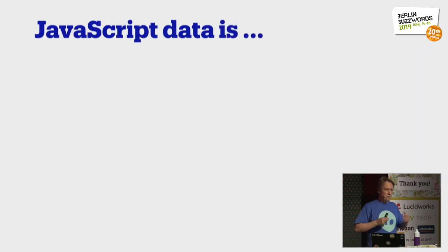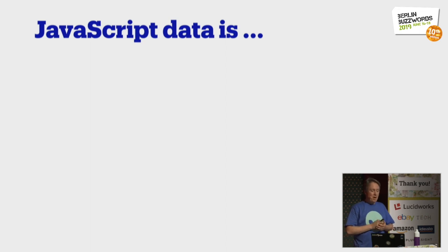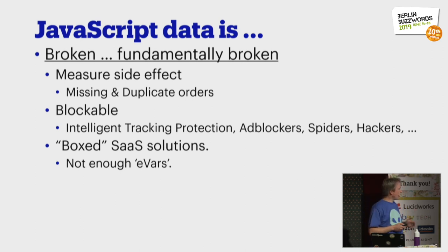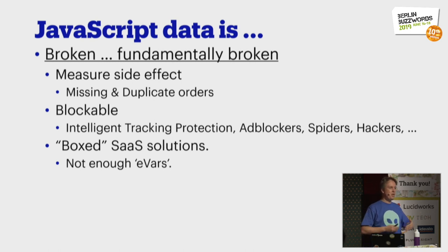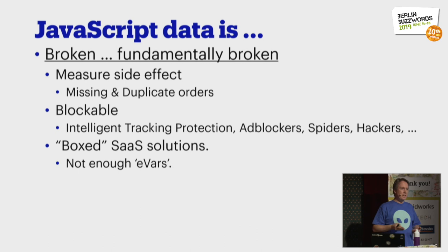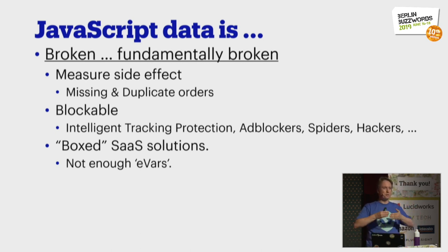The alternative systems like Omniture and Google Analytics are all JavaScript-based. In my opinion, they are broken. Fundamentally broken. Primarily because you're measuring a side effect. You're not measuring the page; you're measuring the effect of a script that is on the page. That means stuff goes missing, stuff goes duplicate. In fact, the measuring of orders is on the order confirmation page, which is a side effect of a side effect.